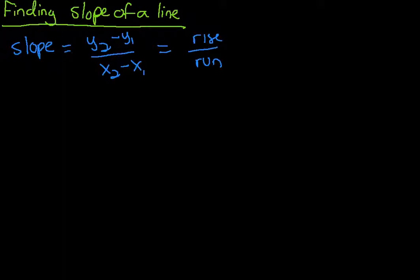The best way to go through this would be just a couple of examples. Maybe we had the point 1 comma 3 and the point 4 comma 9, and we wanted to figure out what the slope of this was. Well, we want to label our x's and y's.